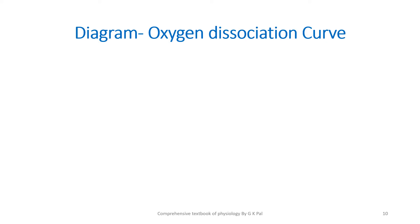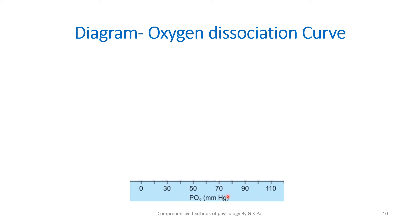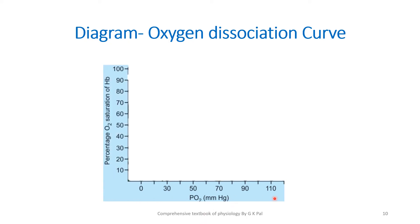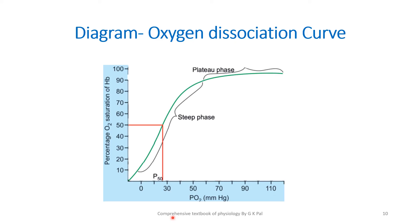Now you have to draw a diagram of the oxygen dissociation curve. On the x-axis, show the partial pressure of oxygen from 0 to 110 mmHg. On the y-axis, mark the percentage of oxygen saturation of hemoglobin. Then draw the hemoglobin dissociation curve showing the P50 and also marking the different phases.